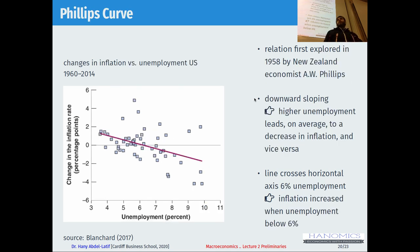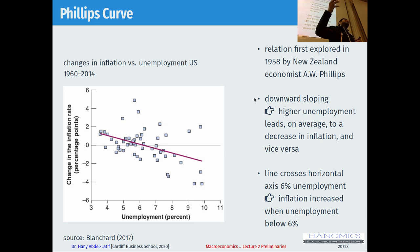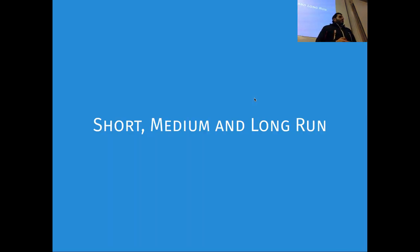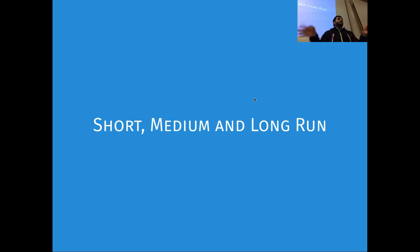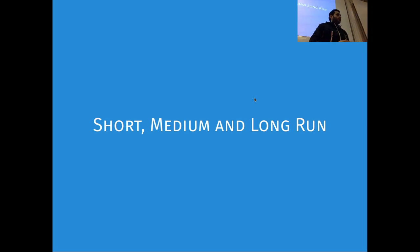The Phillips Curve describes the relationship between inflation rate and unemployment rate — also a downward sloping curve, meaning a negative relationship. Higher unemployment leads on average to a decrease in inflation, and vice versa. So: higher GDP growth is associated with lower unemployment (Okun's Law), and higher unemployment is associated with lower inflation (Phillips Curve).